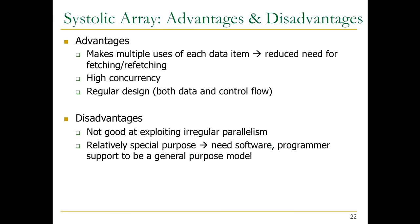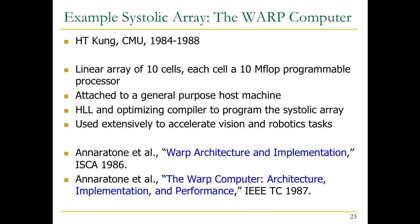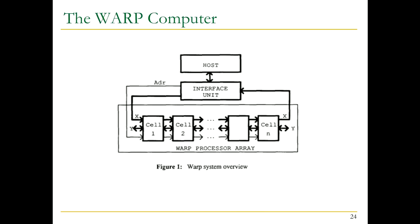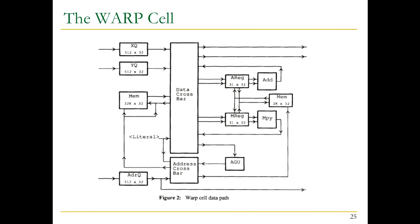An early example: the Warp computer, developed by H.T. Kung at CMU. It had a linear array of 10 cells, each a 10-megaflop programmable processor. They attached it to a general-purpose host machine and wrote a high-level language with an optimizing compiler to program it. They used it extensively to accelerate vision and robotics tasks and image processing. The data flows through these cells and goes back to the host, processing many, many images.